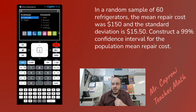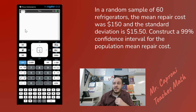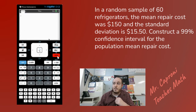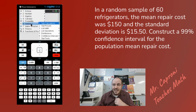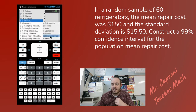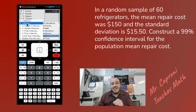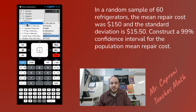Starting at the home screen, click on the calculator. Once in the calculator, go to the menu button, then the statistics tab, then down to confidence intervals. From there, click on the t-interval. You use the t-interval when you have the sample standard deviation instead of the population standard deviation.